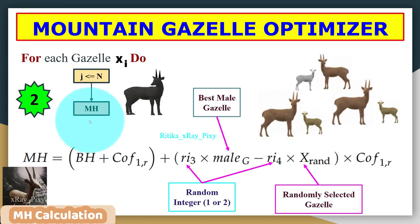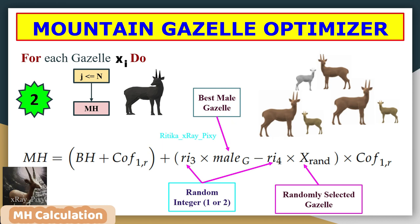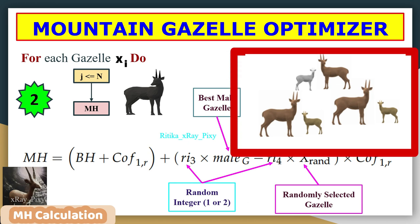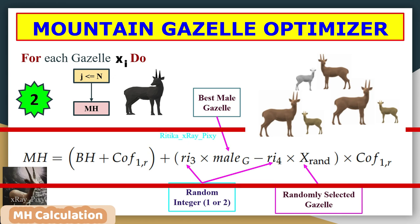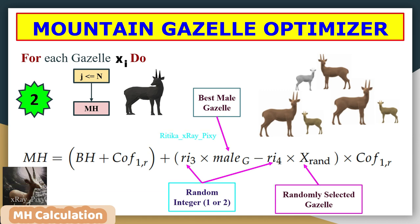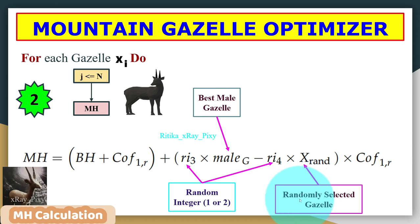The second mathematical model is the maternity herd — mothers and their offspring. This simulates the mother gazelle's behavior in protecting offspring. As in real life with death and birth, old and sick individuals die and new ones come by birth. The maternity herd ensures continuity by giving birth to new strong gazelles. Here, vh is the coefficient vector of the young male herd, ri3 and ri4 are random integers (1 or 2), the best solution represents the best male gazelle, and xrand is a randomly selected gazelle.